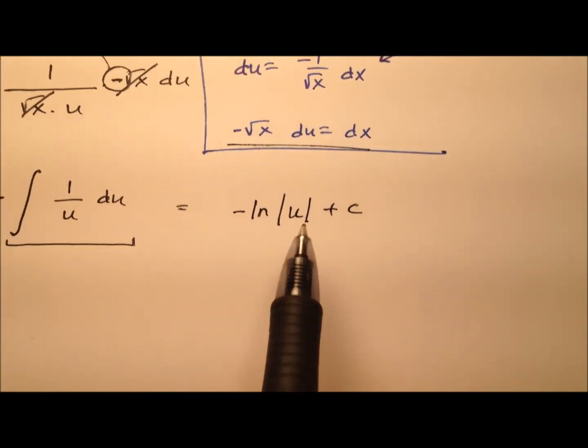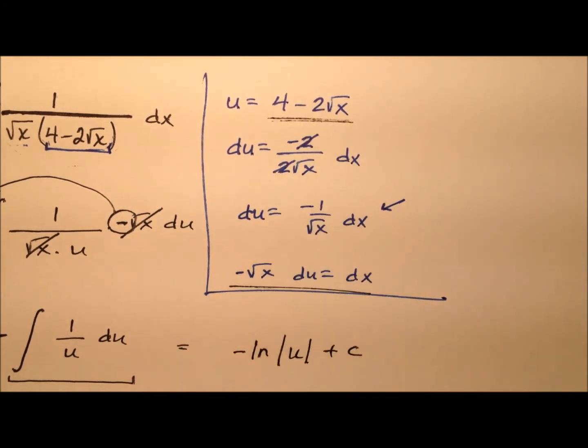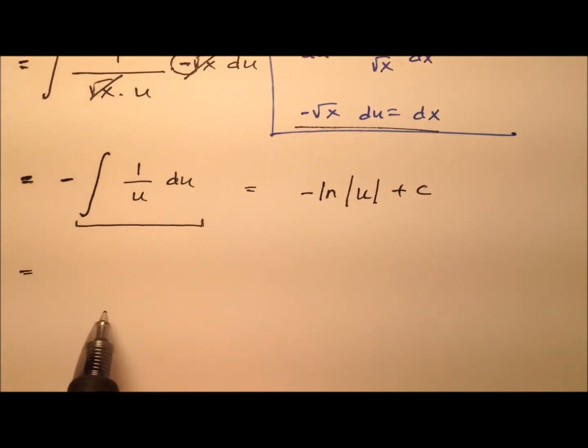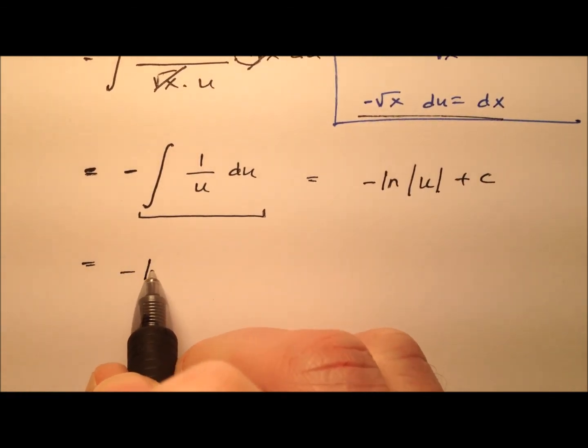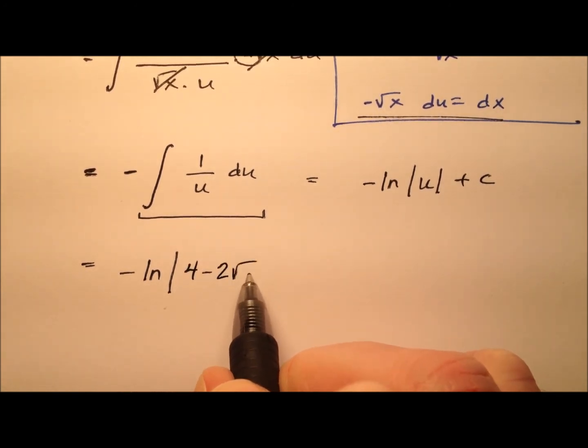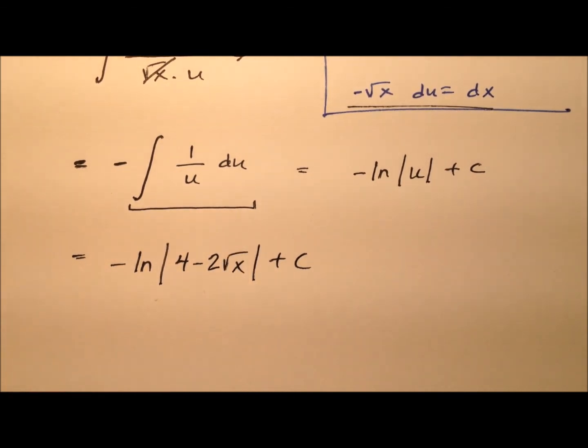So that's what it looks like we have. And then substituting our expression back in that we had for u, 4 minus twice the square root of x. So we have the opposite of the natural log of the absolute value of 4 minus 2 times the square root of x plus c. So here's one way you could write this.